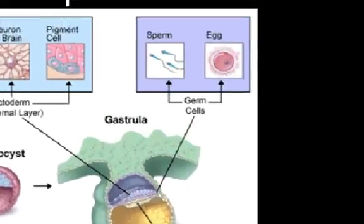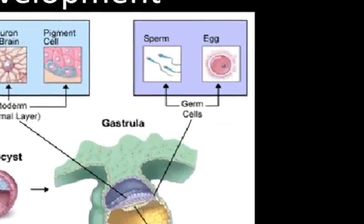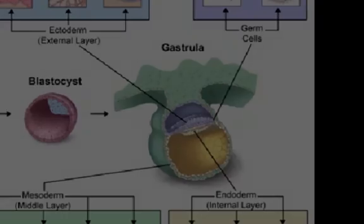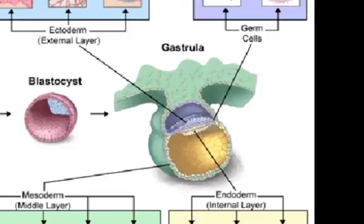The mesoderm will form muscles, tissues of the kidneys, and blood. Some cells will differentiate into germ cells. These germ layers are in a sense stem cells — already programmed to become one of a number of different types of tissues in the body. As these cells differentiate, there are over 200 different types of cells that they'll become.